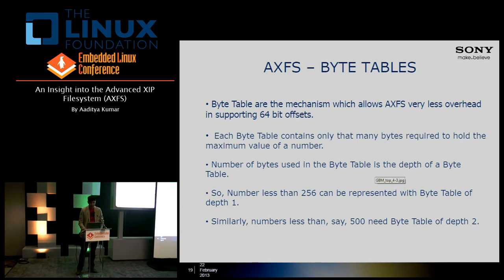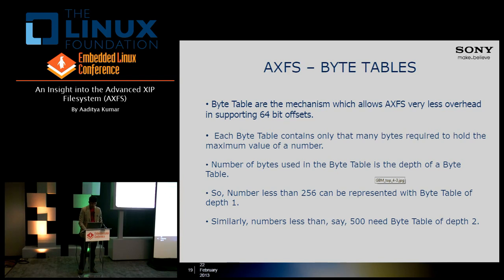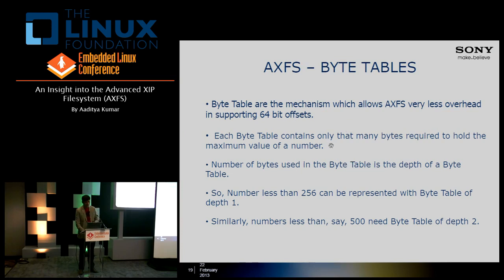AXFS is a 64-bit file system and yet it can have a very compact file system image. How is that possible? AXFS byte tables is a scheme which allows AXFS to have very low overhead for supporting 64-bit offsets. A byte table is a sequence of bytes where each entry contains only as many bytes as are required to hold the maximum value being stored. The number of bytes in a table is called the depth of the byte table.